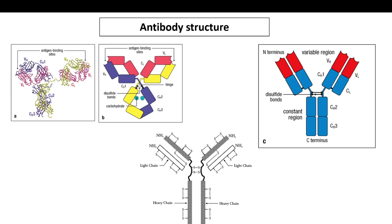If you try to deduce how it looks and convert it into a cartoon, it will contain two light chains and two heavy chains. There are two kinds of domains present in this antibody structure: IgC domains and IgV domains — the variable domains and the constant domains.